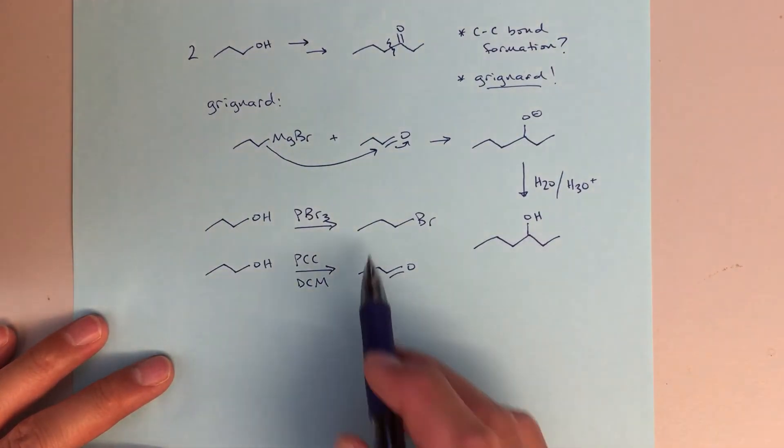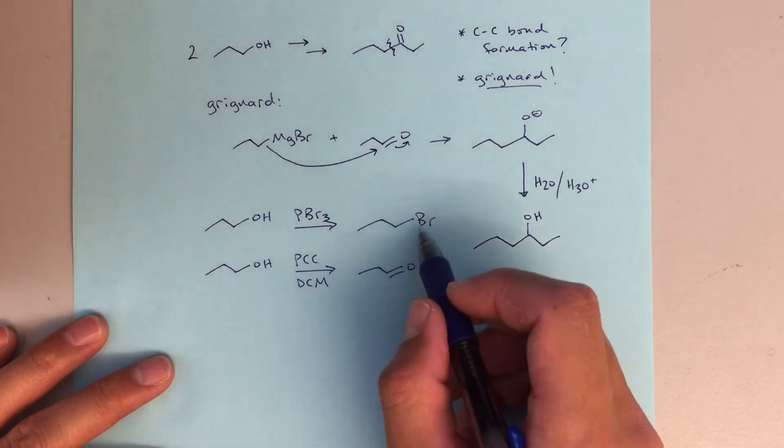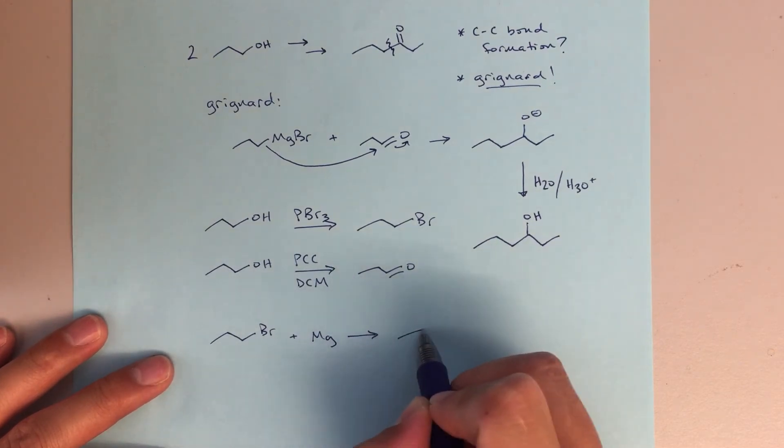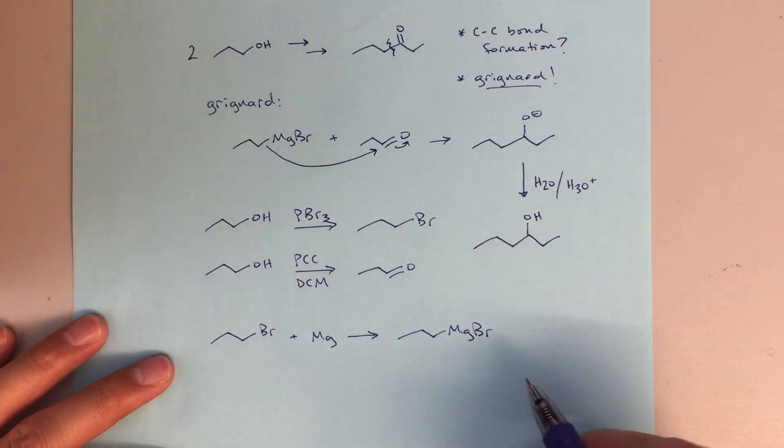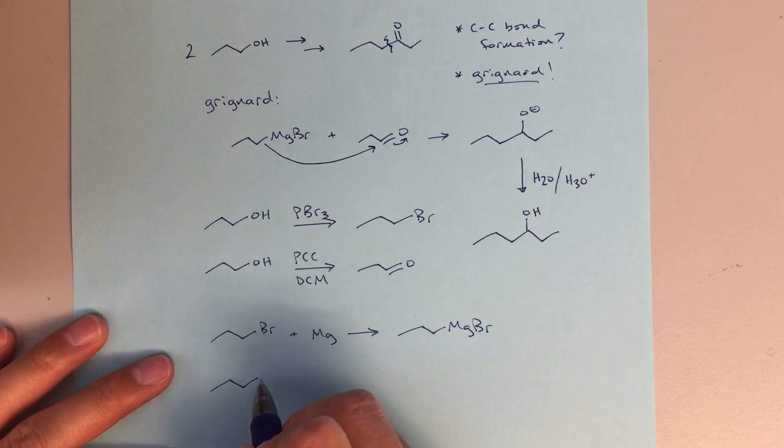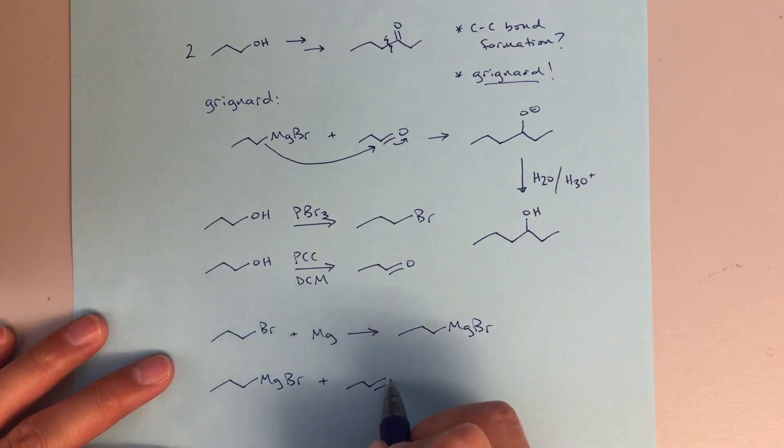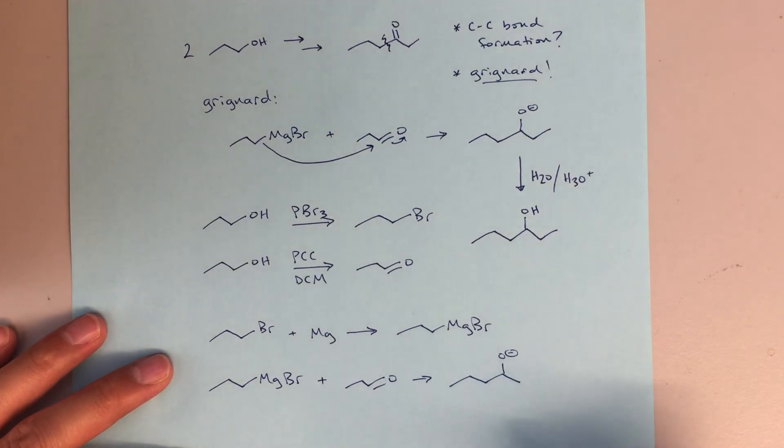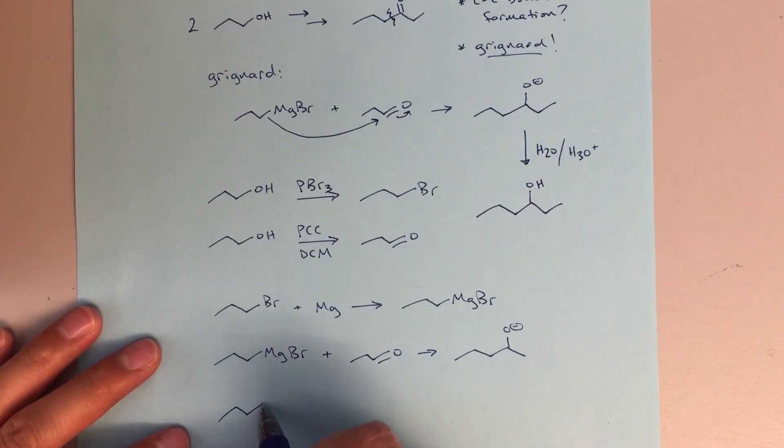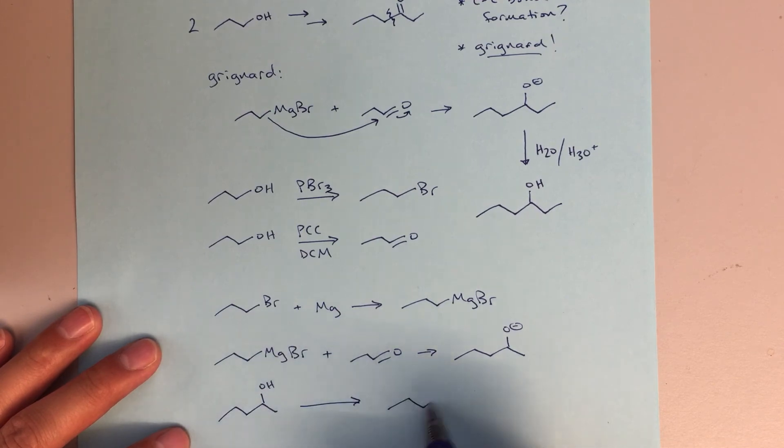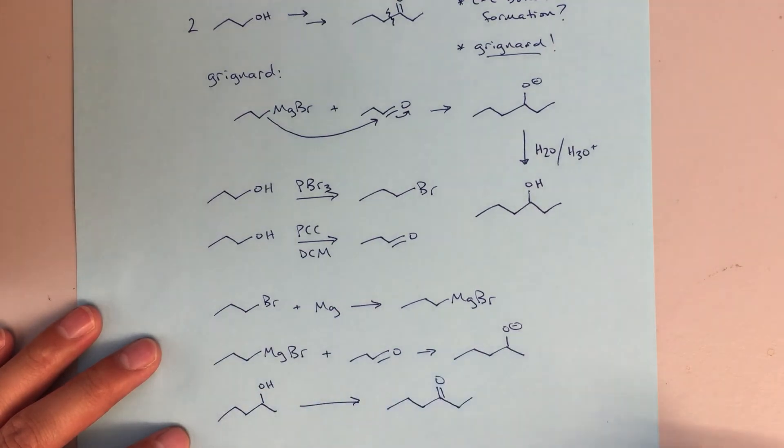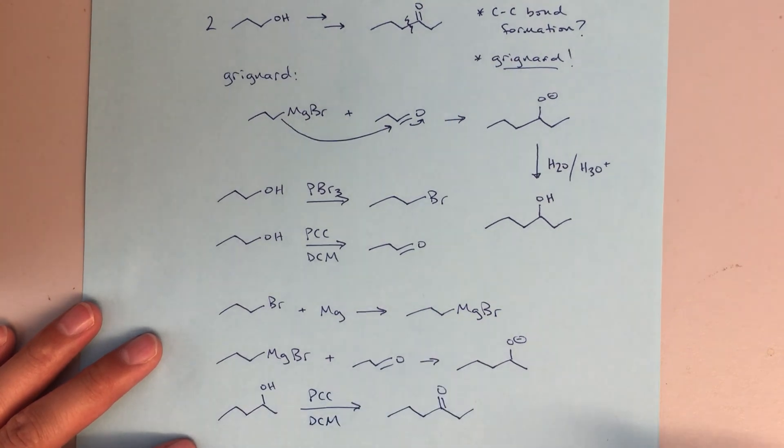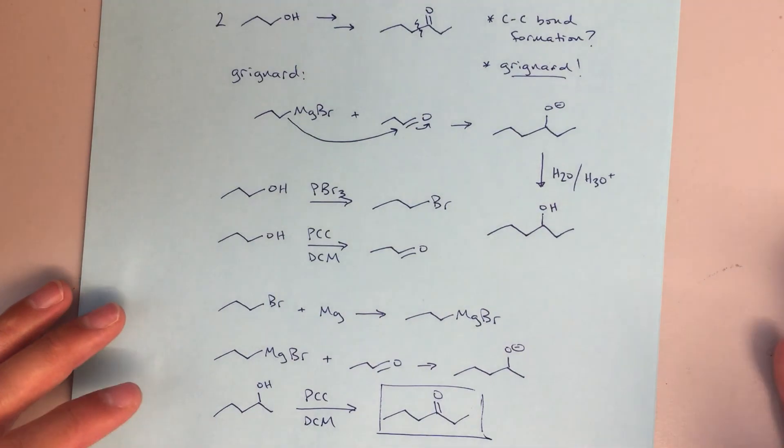So now we sort of got all the pieces. We could imagine taking this alkyl halide plus magnesium. That's going to give us our Grignard. Then our Grignard plus our aldehyde will lead us to what we wrote right up here, lead us to this alkoxide. We can protonate that alkoxide. And then the last step to get to our desired ketone product, we can just use PCC in dichloromethane. In this case, you could also use chromic acid. That would also be appropriate.